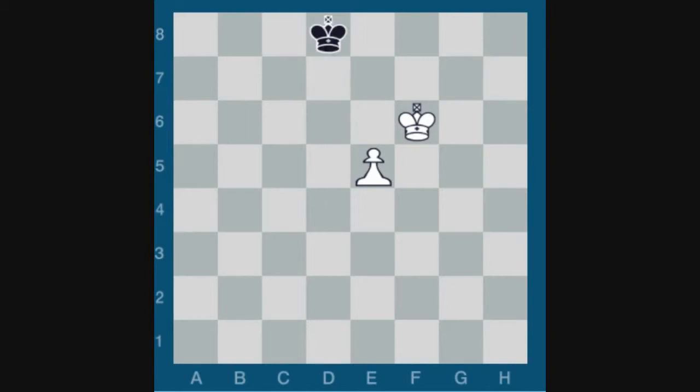If Black were to play now King D8 to try to get a diagonal opposition, then White could simply play King F7, followed by escorting the pawn of the board E6, E7, E8 Queen. If instead, Black were to play King E8, how do you win? Here White takes the opposition again, King E6. If Black plays King F8, King D7, followed by the pawn coming up the board. If King D8, then King F7 wins.